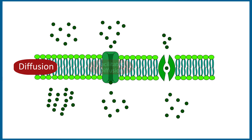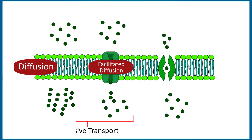Next is facilitated diffusion. It's almost similar to simple diffusion — the molecules are moving from higher concentration to lower concentration and it would continue until equilibrium is maintained. The only difference is that facilitated diffusion uses a carrier protein. Both of these are examples of passive transport because the molecules are moving from higher concentration to lower concentration without any use of energy.